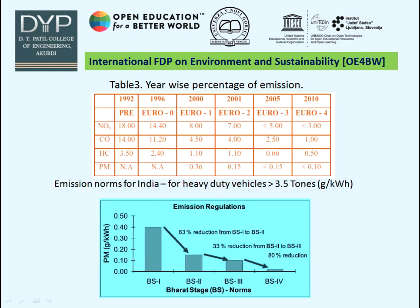This table indicates the year-wise percentage of CO emission from 1992 to 2010. In 1992 the value is 14; in 1996 it is 11.20; in 2000 it is 4.5; in 2001 it is 4; in 2005 it is 2.5; and in 2010 it is 1.20. These are emission norms for India for heavy-duty vehicles greater than 3.5 tons, in grams per kilowatt-hour.